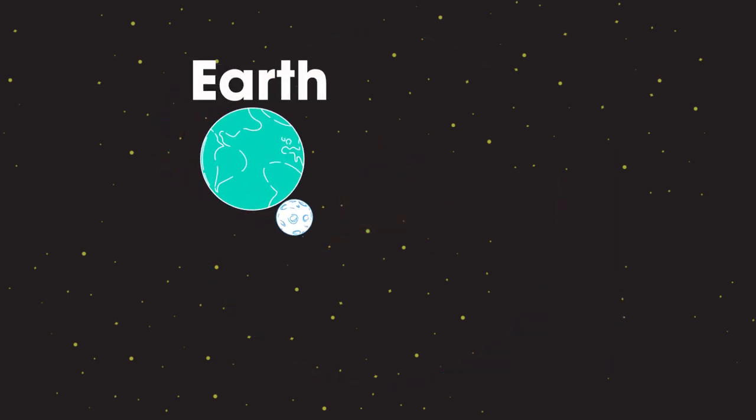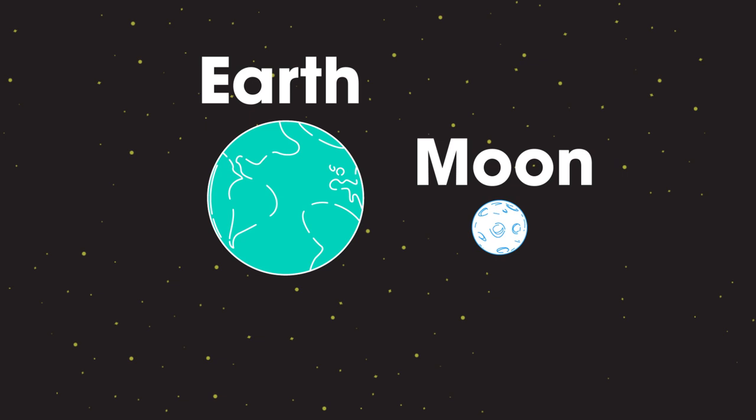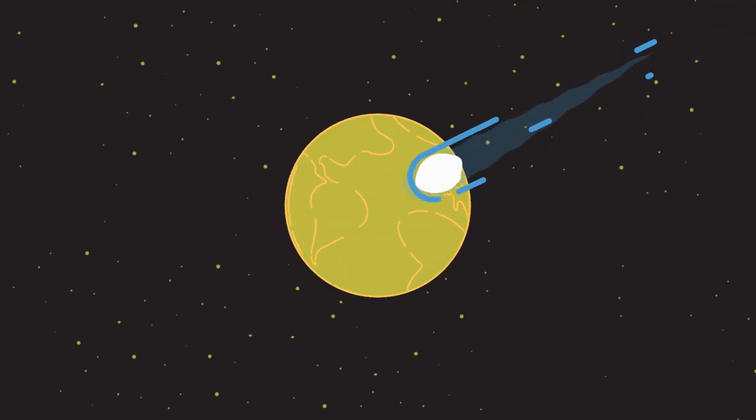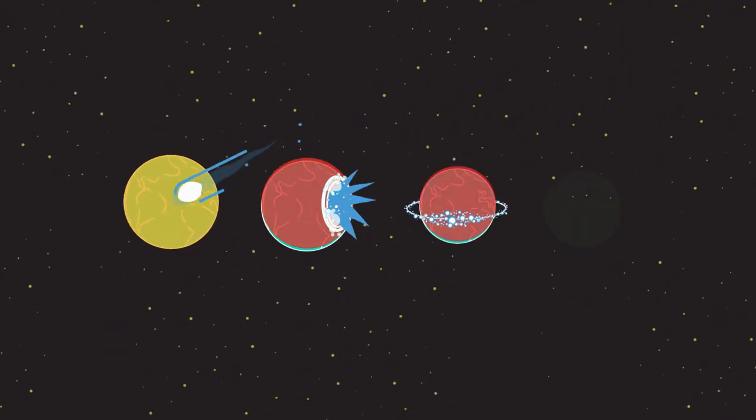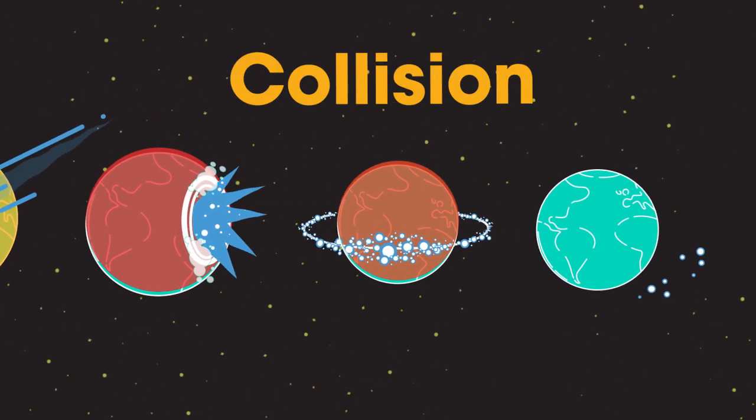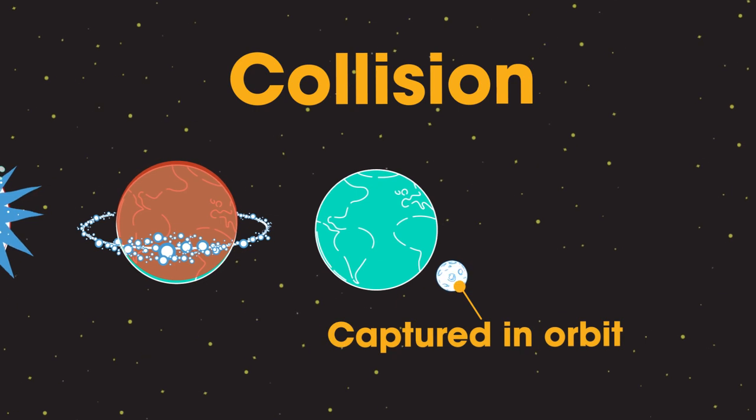Earth is unusual, as our moon, the moon, is large when compared to the planet in orbit. It is thought that the moon was created very early on in the life of the Earth, after a significant interplanetary collision which ejected rock which was then captured in orbit.